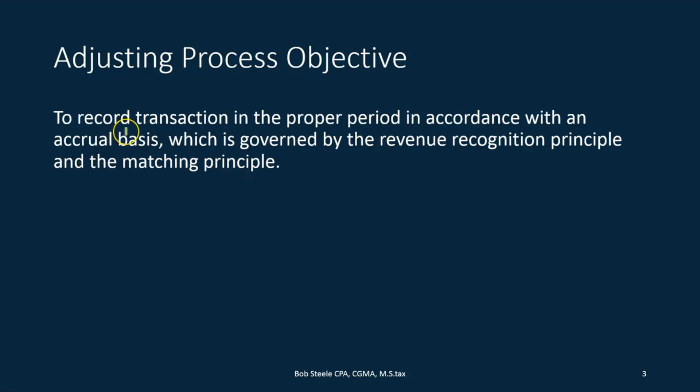In the adjusting process, we look at transactions that take place and the accounting department enters transactions throughout a time period, being a month or a year. At the end of that time period, we want to make financial statements. There are a few accounts that generally need adjustment that are not on a perfect accrual basis. Those are the ones we have to look at as of the cutoff date in order to make adjustments to them.